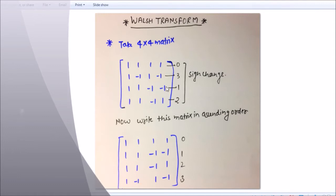What happens is that Walsh has a basic matrix, which is 2 by 2: 1, 1, 1 and minus 1.